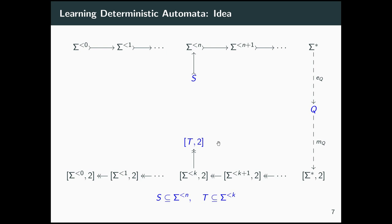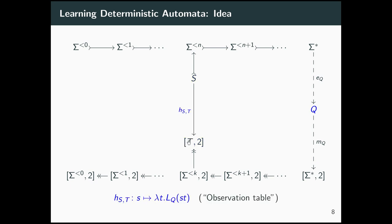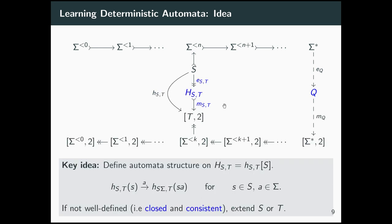Since the automaton Q is unknown, we cannot compute this composite directly. However, we can compute finite approximations of it. If we choose two finite sets of words S and T, we can compute the map that takes a word s from S and a word t from T and asks whether st is contained in the unknown language. This is computable using finitely many membership queries. This map is usually called an observation table because it can be represented as a binary S times T matrix. From this we compute its image, which we call capital H_{S,T}.